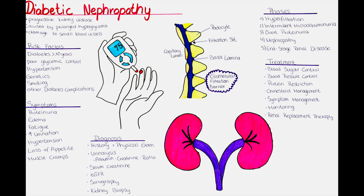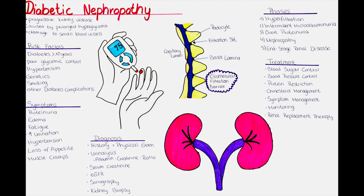In diabetic nephropathy, these podocytes undergo changes which are visible with the electron microscope. What are risk factors for the development of diabetic nephropathy? The longer a patient has diabetes, the higher their risk of developing diabetic nephropathy. Prolonged exposure to elevated blood sugar levels can lead to kidney damage over time. Chronic hyperglycemia is a major risk factor for diabetic nephropathy, as high blood glucose can directly damage the blood vessels and cells in the kidneys.